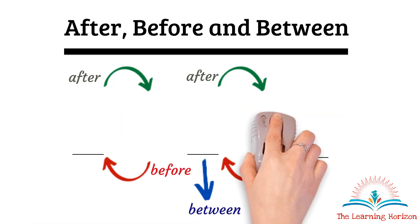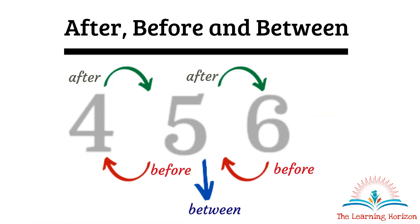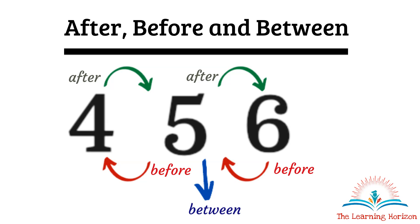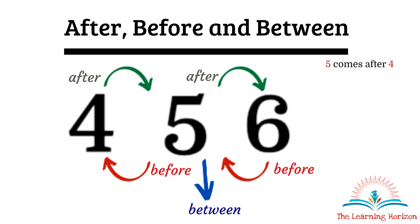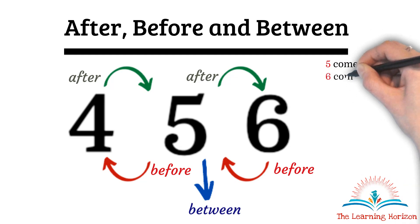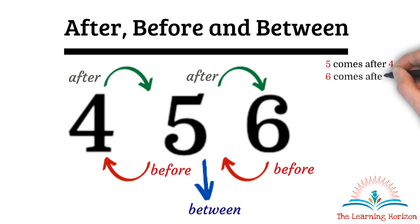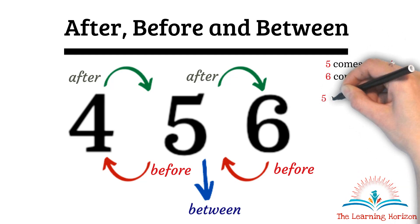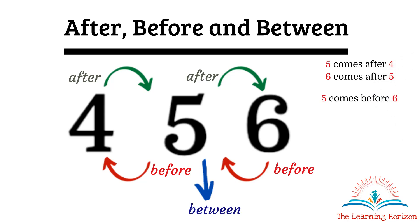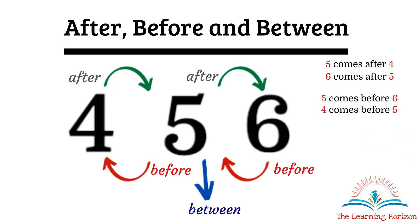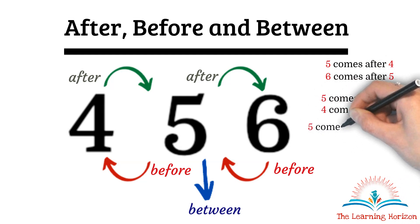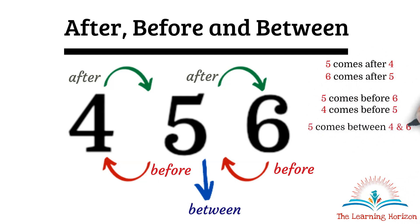The same concept applies to numbers too. For example, 4, 5, and 6: 5 comes after 4, 6 comes after 5, 5 comes before 6, and 4 comes before 5. 5 is the number that comes between 4 and 6. Let us understand this with a few more examples.